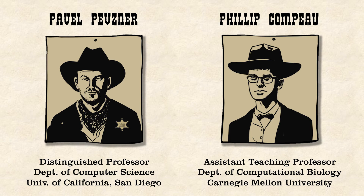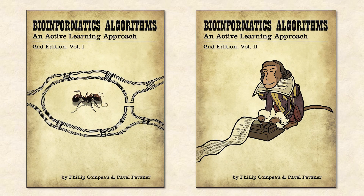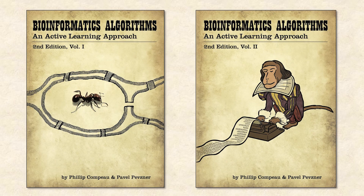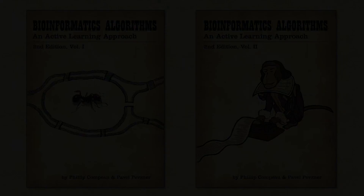Dr. Philip Campo is an assistant professor of computer science at Carnegie Mellon University. To learn why he is dressed this way, you'll need to take this course or read the textbook, Bioinformatics Algorithms: An Active Learning Approach, co-authored by the two speakers.